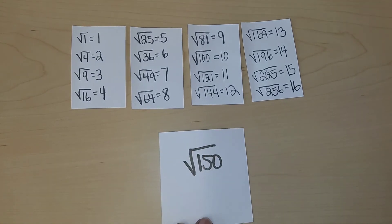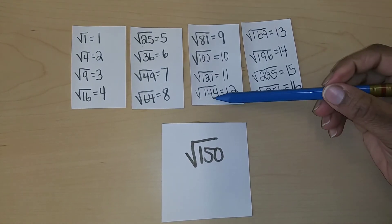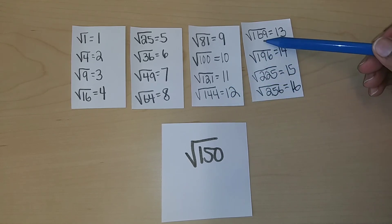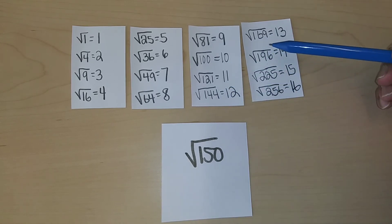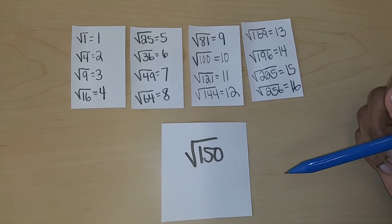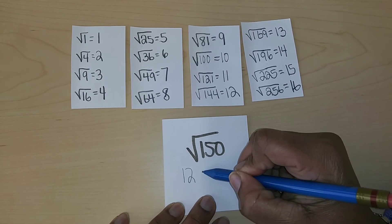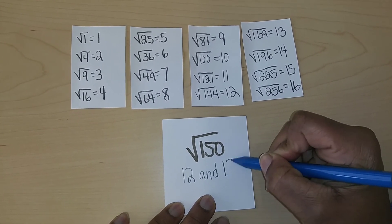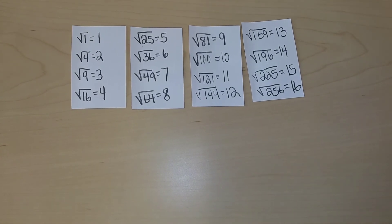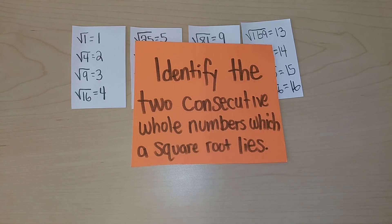And the last one. It's more than the square root of 144 but it's less than the square root of 169, so the square root of 150 would fall between the whole numbers of 12 and 13 on the number line. In this video we identified the two consecutive whole numbers which a square root lies between. I'll see you next time.